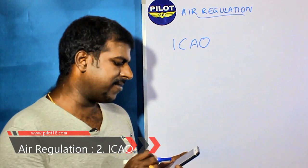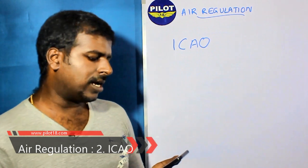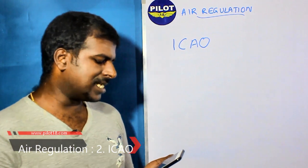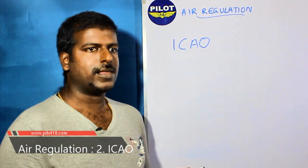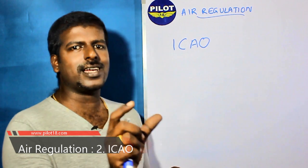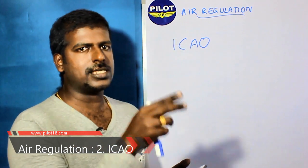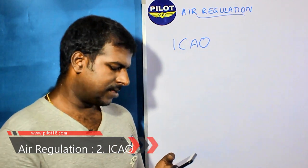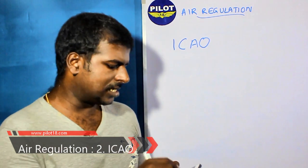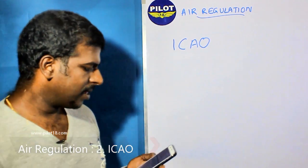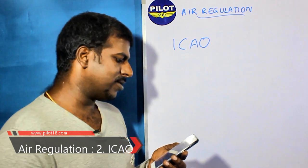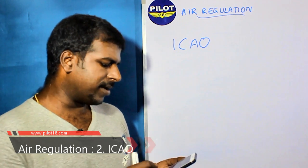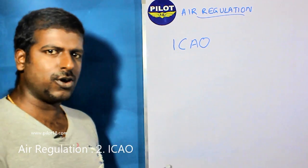Doc 8585 covers designators for aircraft operating agencies, aeronautical authorities, and services. Doc 8643 covers aircraft type designators — designating aircraft as amphibious, seaplanes, heavy, medium, or light. Doc 8126 is the Aeronautical Information Services Manual, and Doc 8697 is the Aeronautical Chart Manual.